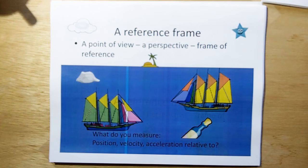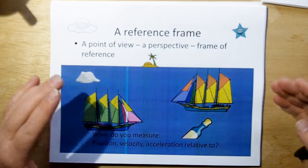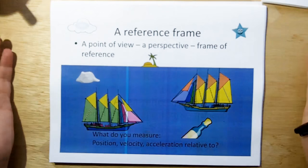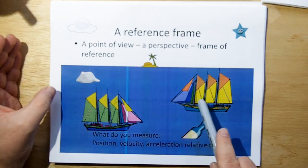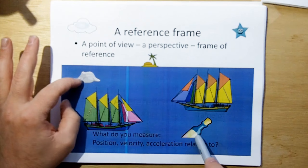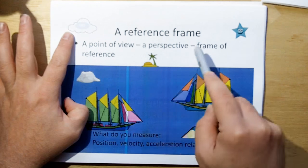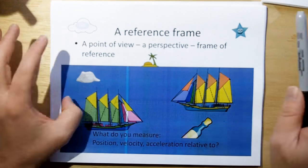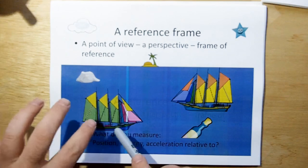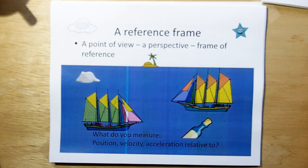What's a reference frame? A reference frame is a point of view, a perspective, a frame of reference. Let me explain this busy picture. Here you've got two ships, a message in a bottle, a rock popping out of the water, an island, a cloud moving in the sky, and a star. Let's say you're on one of these ships and you want to measure your velocity.